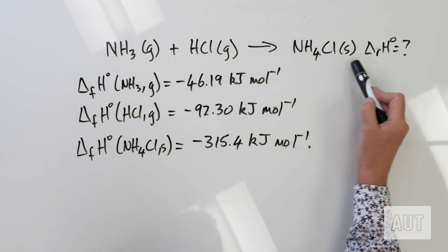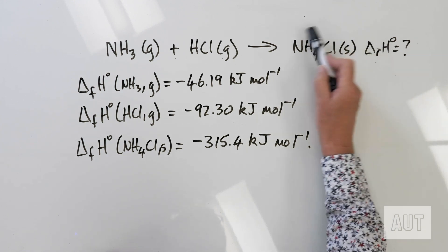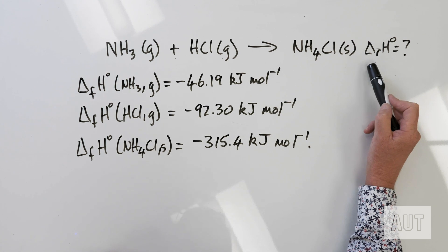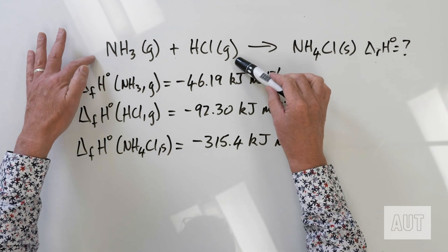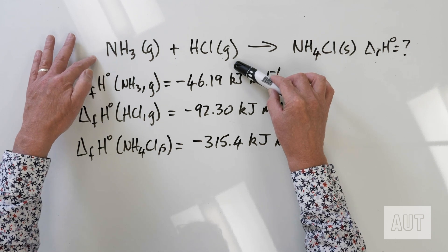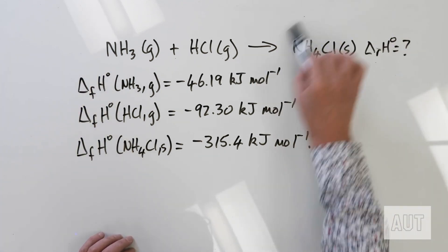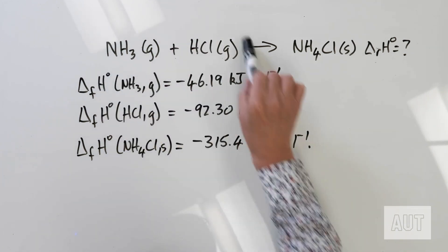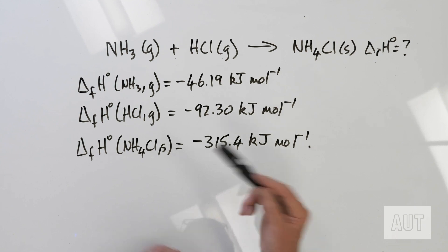All we need to realize is that the enthalpy of any reaction is the difference between the sum of the standard enthalpies of formation of the products minus the sum of the standard enthalpies of formation of the reactants. In other words, you sum up all of the standard enthalpies of formation on the right-hand side, subtract off all of those on the left-hand side — it's a very straightforward type of calculation.